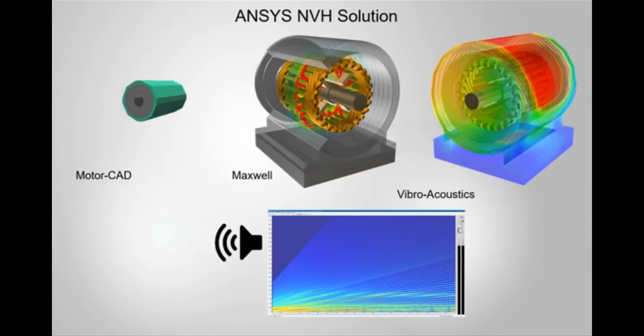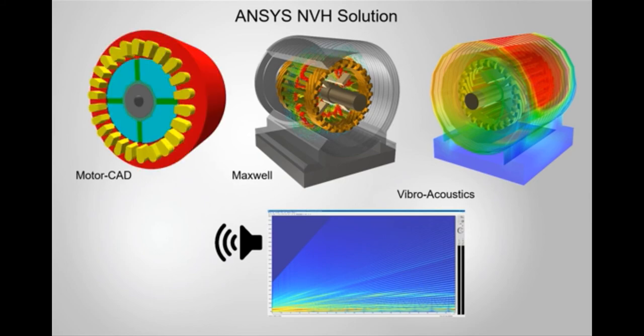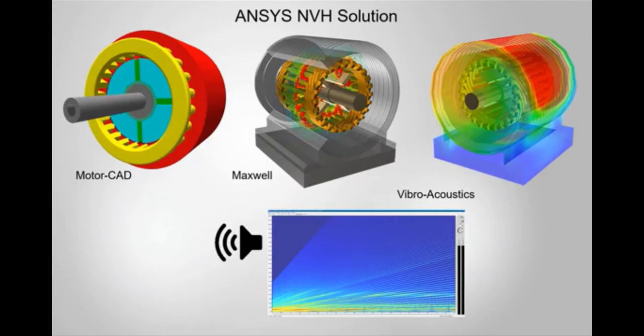For example, the workflow is used to optimize the NVH of an electric vehicle through a waterfall diagram, corresponding to the full torque speed operating range previously evaluated by MotorCAD.